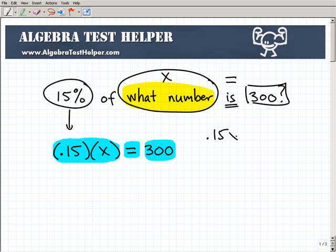So I have a nice little equation here I could solve, 0.15X equals 300. And to solve that, all I have to do is divide both sides of the equation by 0.15. So let me get my calculator out. So 300 divided by 0.15 is equal to 2,000. So X would be equal to 2,000.